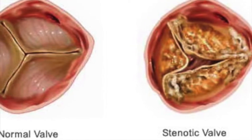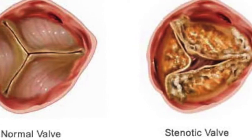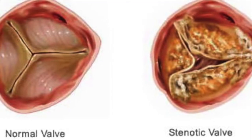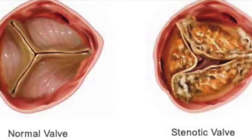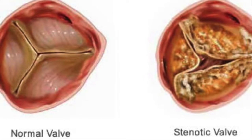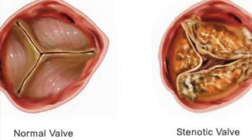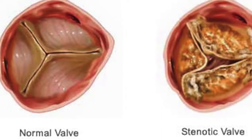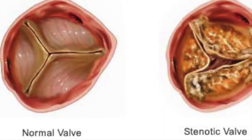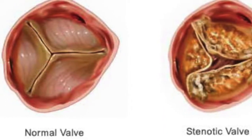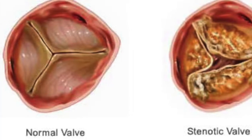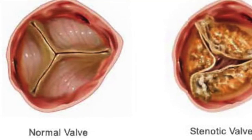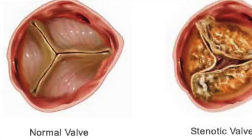Stenosis occurs when the leaflets become thicker and narrower. As a result, the valve is no longer able to fully open or close, and the valvular tissue hardens and loses flexibility. Calcification occurs when calcium builds up on the valve, which impedes its ability to open fully. Similarly, regurgitation is the result of damaged valves that no longer close fully. All of these conditions hamper blood flow so that the heart must overexert itself to compensate for the loss of efficiency.